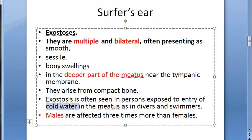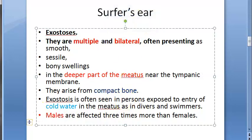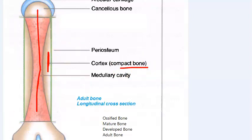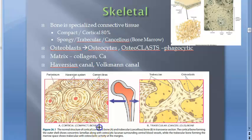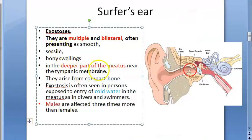Cold water is a key term you should not forget. They arise from compact bone - the cortex of the bone. In bone, there is compact bone (cortex) and cancellous bone (bone marrow). We are talking about the cortical or compact bone here.